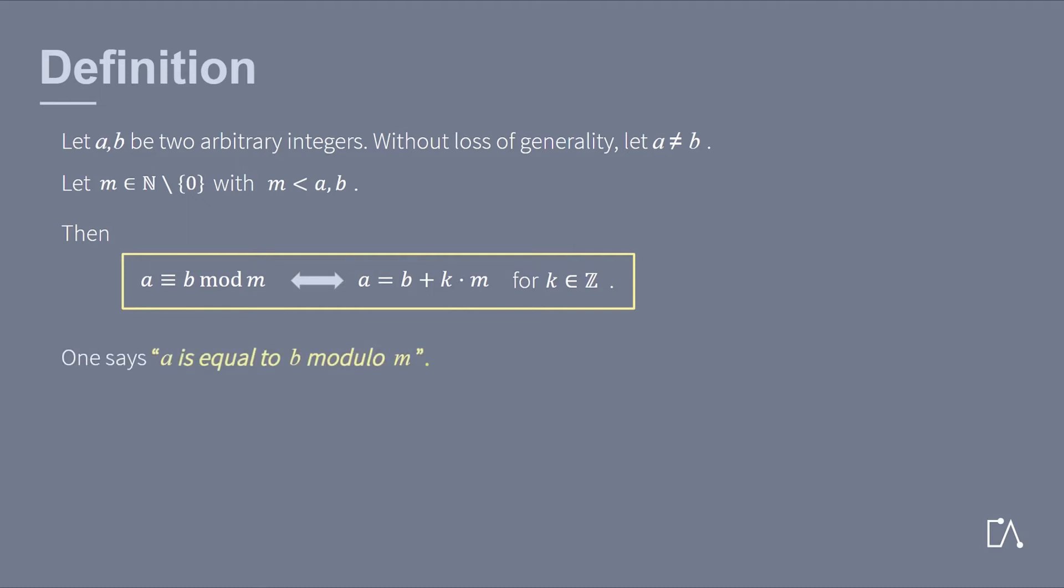One says that a is equal to b modulo m. So, basically, a and b are the same number up to a multiple of m.